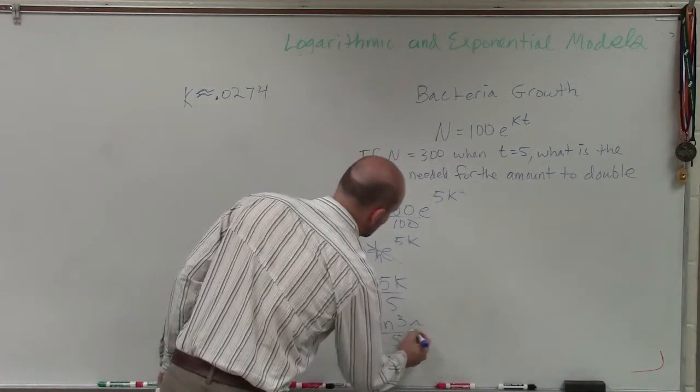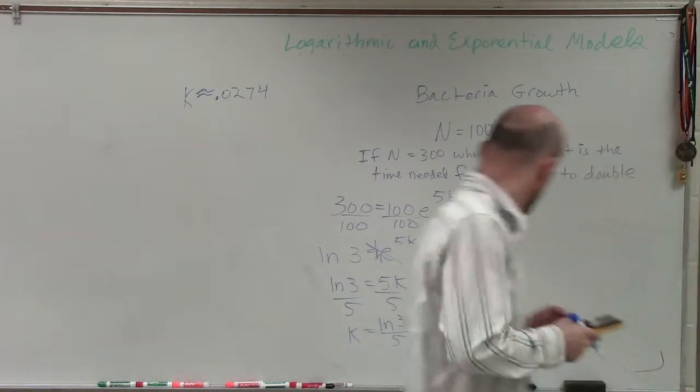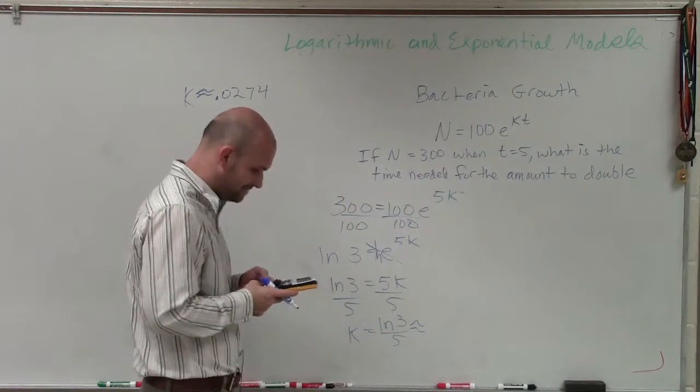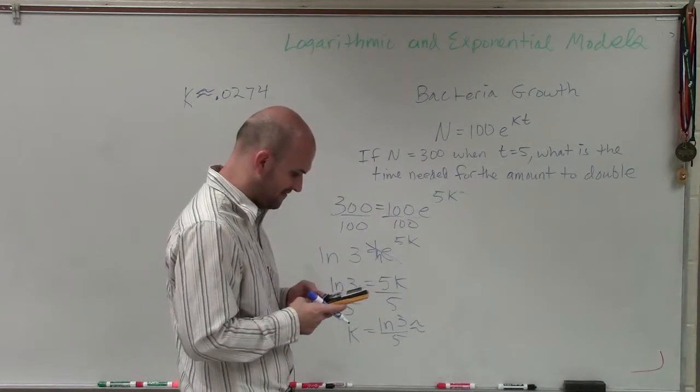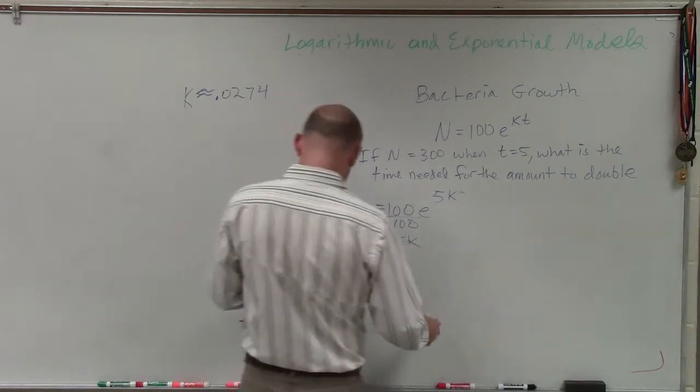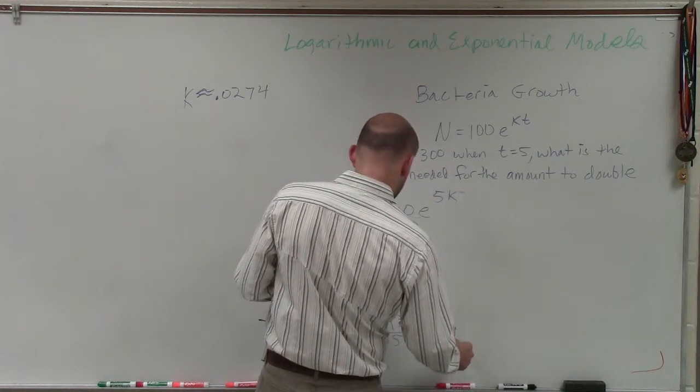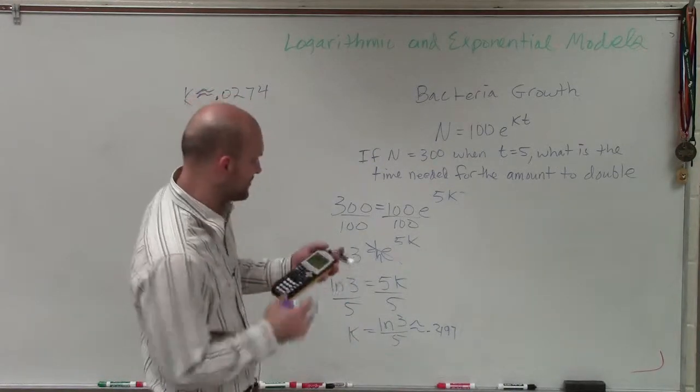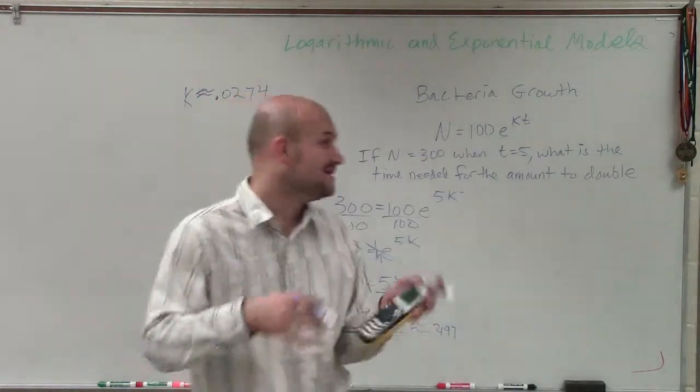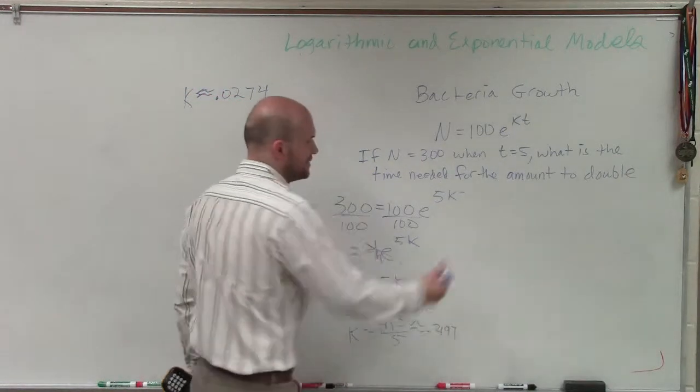Now, we can approximate that answer by using our nice little calculator, which I have one right over here. So to do that, I'll take the ln of 3 and divide it by 5. And I get 0.2197. Now, I don't like to approximate these answers. So I'm going to keep this value in my calculator. So when I plug it into my other equation, I'm going to use the exact value for k.